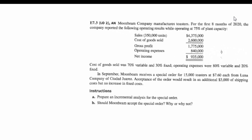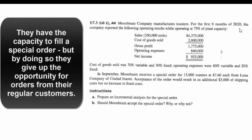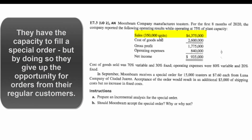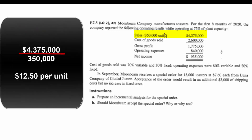Let's take a look at Moonbeam Company. In the first eight months of 2020, they're operating at 75% of plant capacity, so they have 25% of the plant capacity available to take on new orders. Their sales were $4,375,000 for 350,000 units. So before we go any further, let's figure out how much we sell our units for — we'll take dollars per unit.